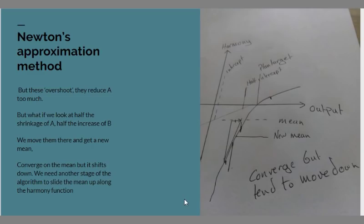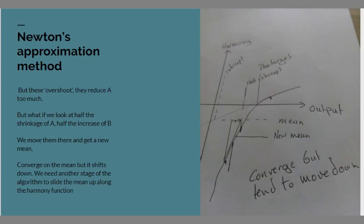The problem is that if we just do this we converge on an output mix that meets the plan target ratios but it will be at a low harmony point because given the shape of the harmony function the reductions that we carry out in the high harmony industries will be greater than the increases we carry out in the low harmony industries. This means we need some other way of moving the mean position up along the harmony function towards the plan target and hopefully succeeding it.